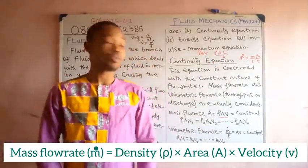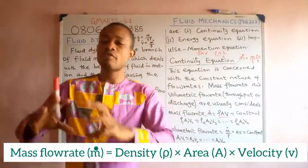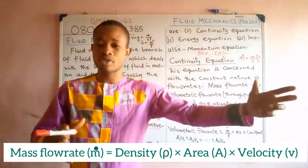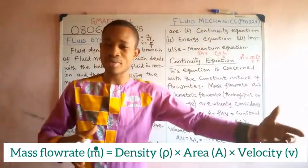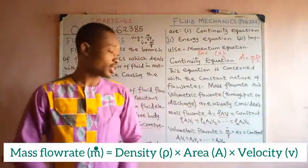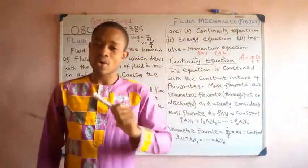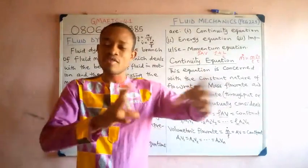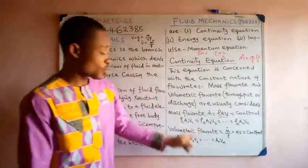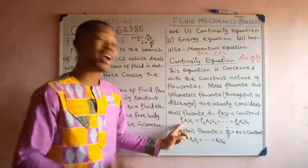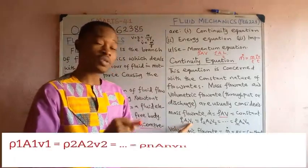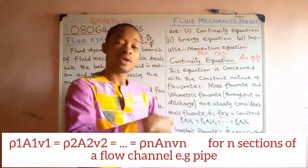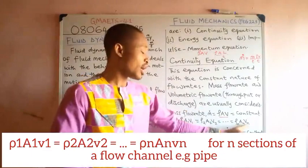The mass flow rate is a constant — the mass of fluid per unit time at a given section of the pipe is equal to the mass coming out of the other section. Since ρAV equals a constant, we can write it as ρ₁A₁V₁ = ρ₂A₂V₂ = ... = ρₙAₙVₙ.